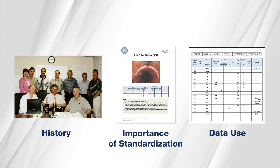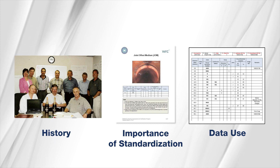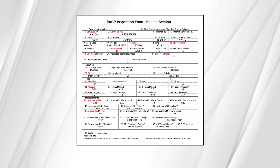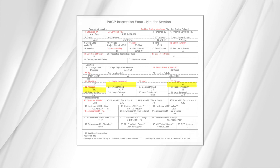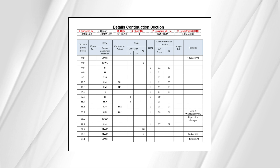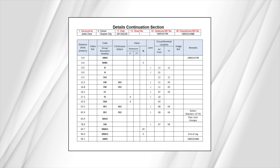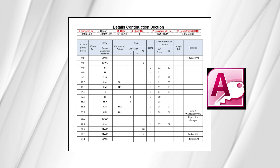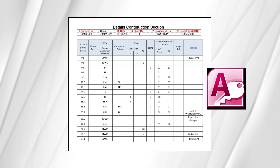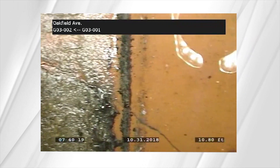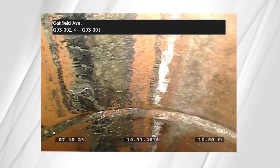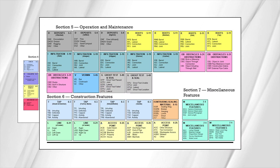Now that we've outlined the history, the importance of standardization, and how the data are used, let's look at the PACP inspection. A PACP inspection produces a summary of general information regarding a pipe's location and attribute data, such as diameter, material, and shape. It also provides a detailed assessment of all visible defects, features, and other observations. The electronic deliverable is an access database easily incorporated into most municipalities' data management systems, and a video recording transferable through portable hard drives, DVD, or other electronic media such as FTP sites. Appendix B contains codes categorized into four families: structural defects, O&M observations, construction features, and miscellaneous features.